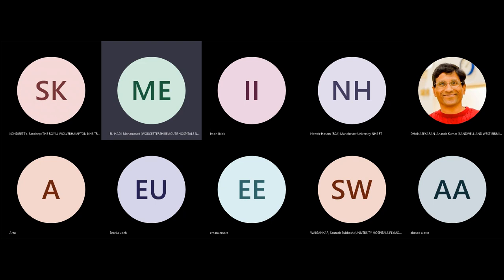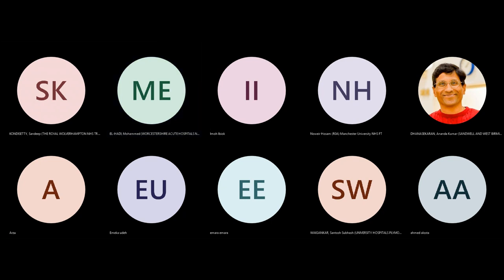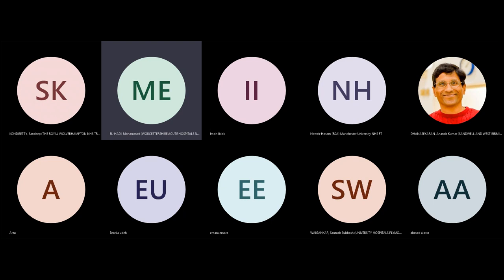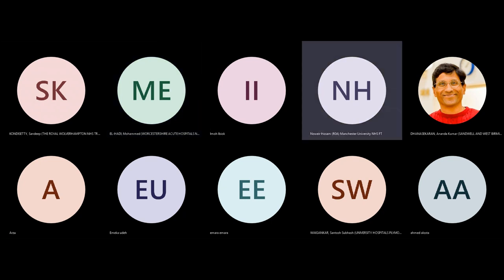You do the ureteroscopy. You want to put your access wire. Which wire do you like? I would like to start with the Sensor wire. The Sensor has a nitinol core with a 5cm hydrophilic coat, so it's malleable and less traumatizing to the ureter, and more flexible to bypass the stone if it's causing complete obstruction or impacted.